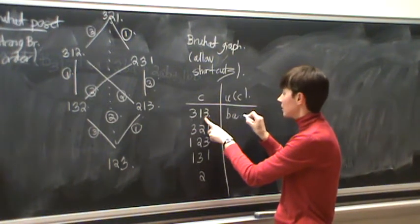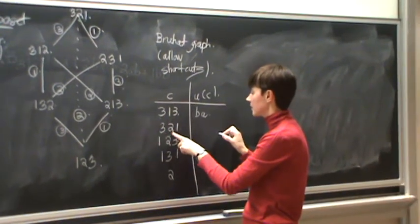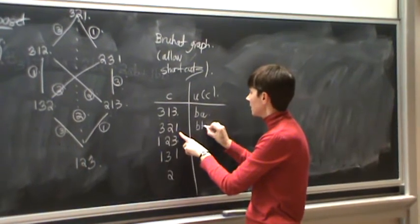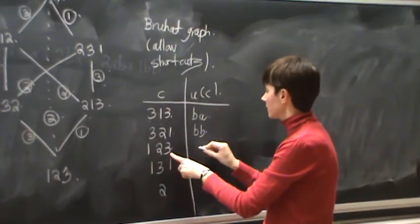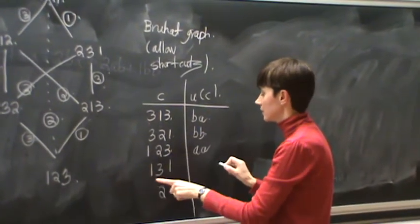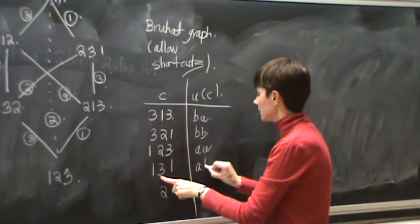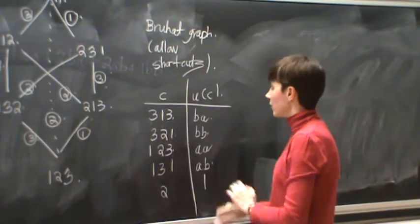So this is BA, this goes 3, 2, 1, BB. This is 1, up to 2, up to 3, 2 plus x. Ascent, descent, and finally there's no relation 1.